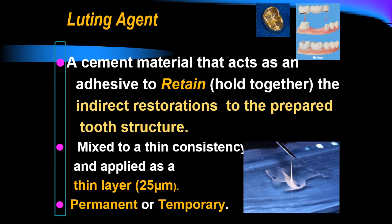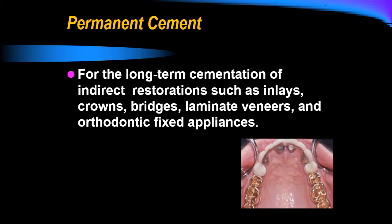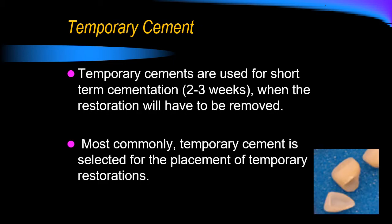When dental cements are used as a luting agent, their function is to retain or hold together the indirect restoration to the prepared tooth structure. We mix them to a luting consistency — a thin layer of about 25 microns. They are used for either permanent or temporary cementation. Permanent cementation means long-term cementation of the indirect restoration.